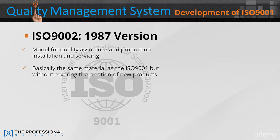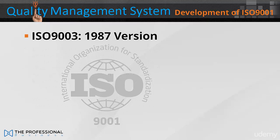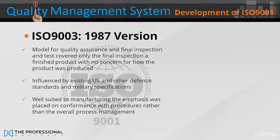The ISO 9002 1987, model for quality assurance in production, installation and servicing, had basically the same material as the ISO 9001, but without covering the creation of new products. The ISO 9003 1987, model for quality assurance in final inspection and test, covered only the final inspection of finished products, with no concern for how the product was produced.